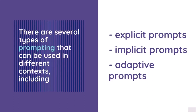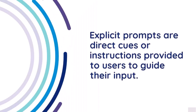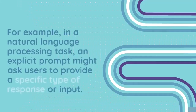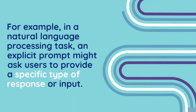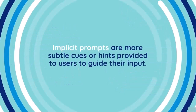These types include explicit prompts, implicit prompts, and adaptive prompts. Explicit prompts are direct cues or instructions provided to users to guide their input. For example, in a natural language processing task, an explicit prompt might ask users to provide a specific type of response or input.